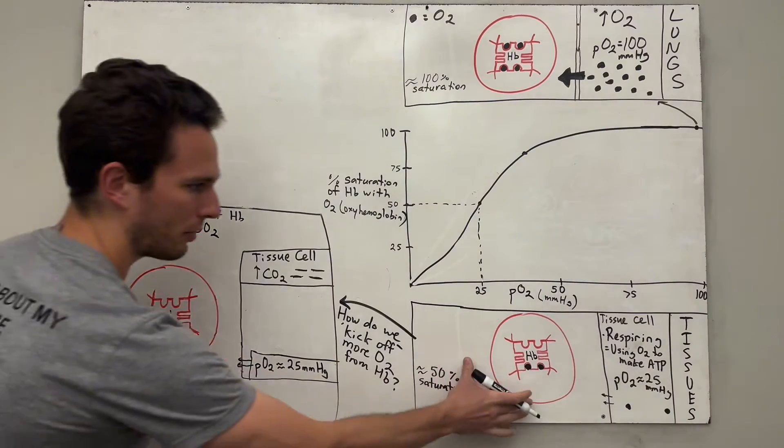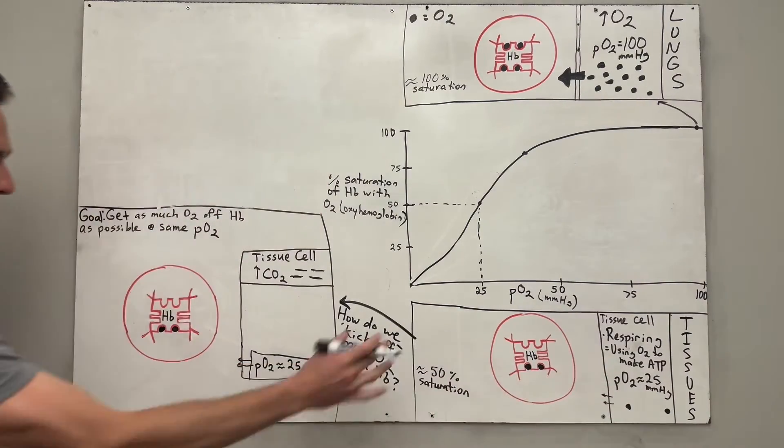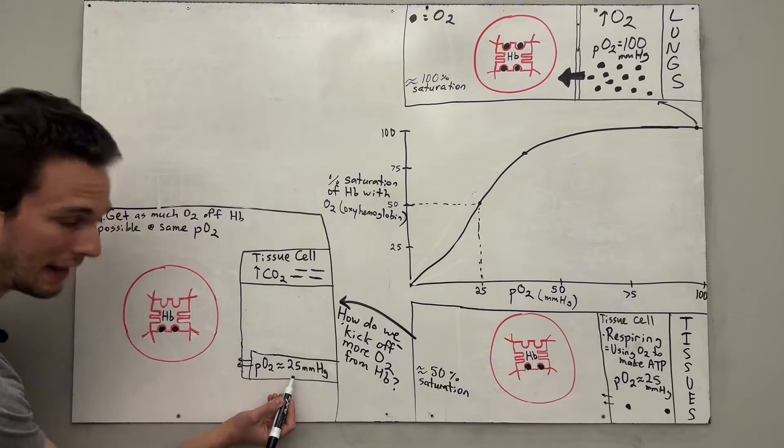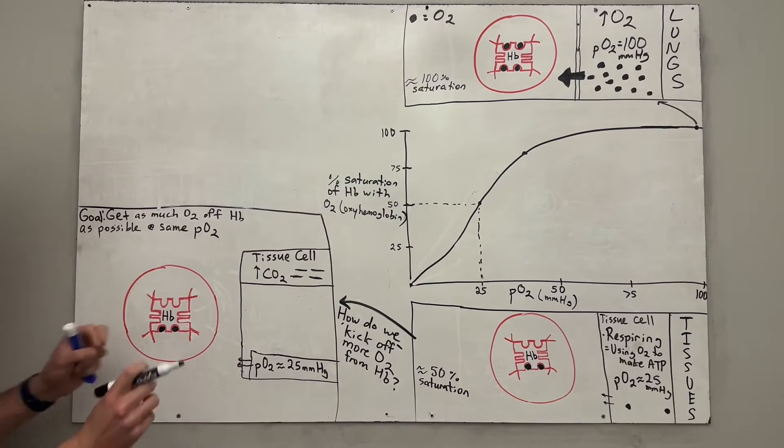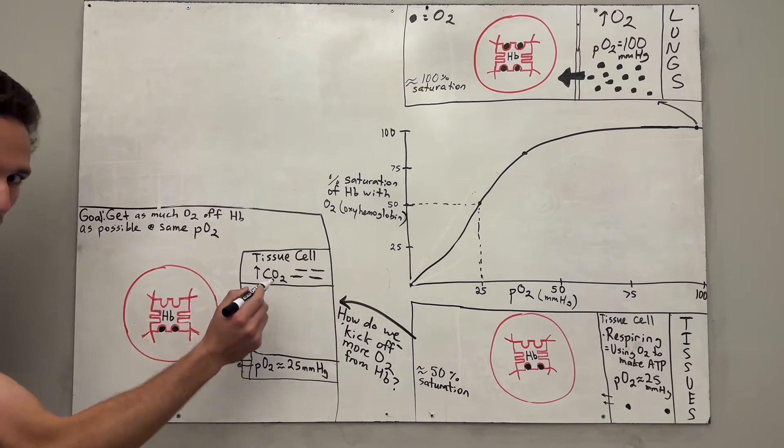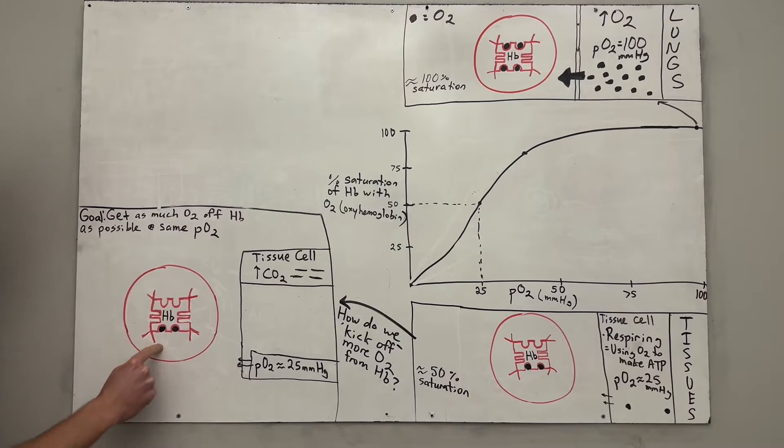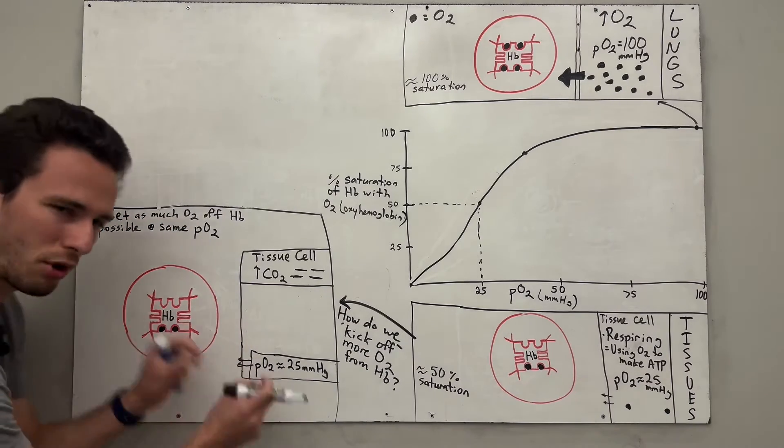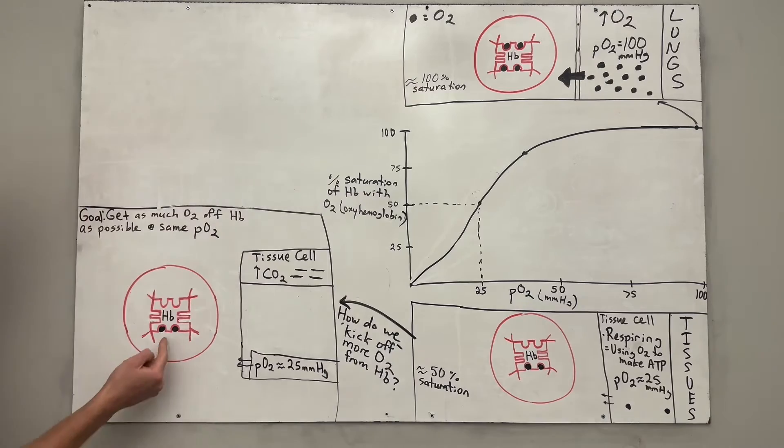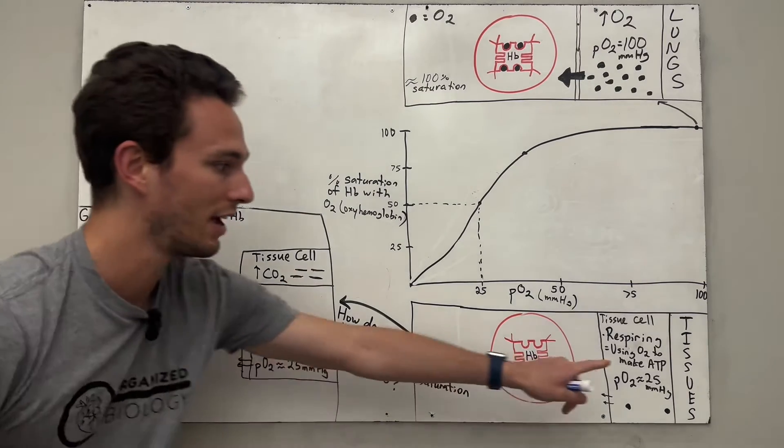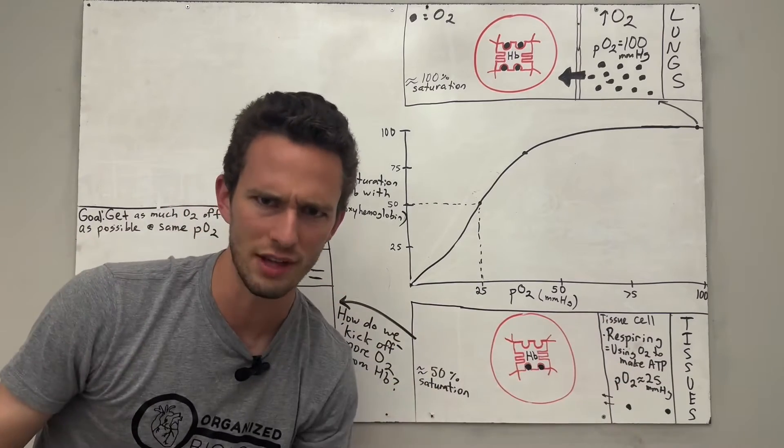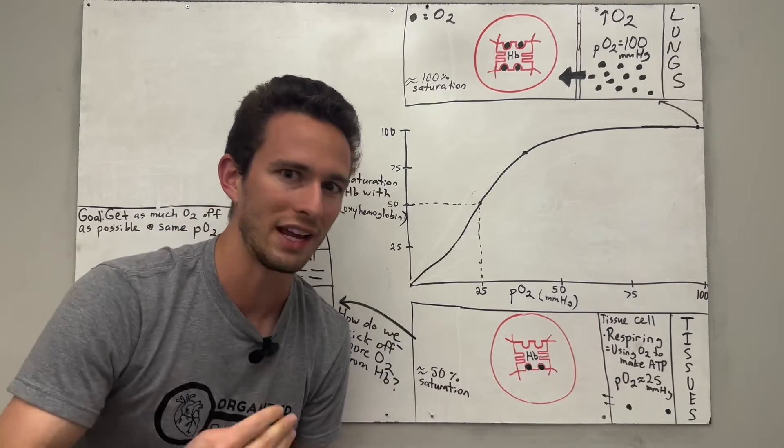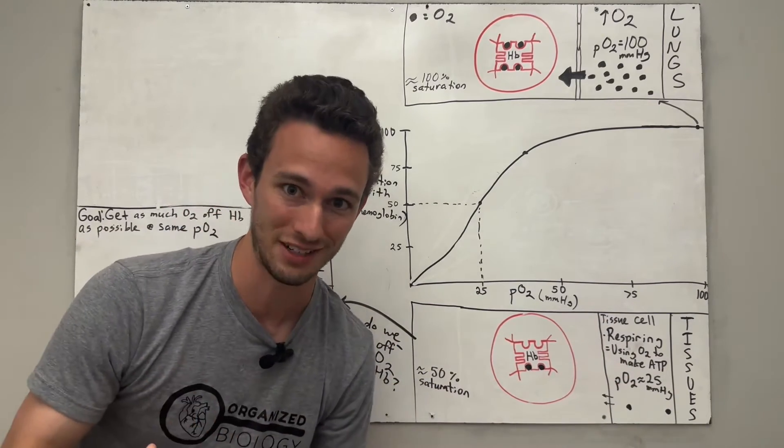So now here's the same drawing of the red blood cell, the partial pressure of oxygen that I drew here. The partial pressure is still 25. We've still got that 50% saturation, but remember the goal at the tissue cells is to get as much oxygen off the hemoglobin as possible at the same partial pressure. We basically want to unload as much oxygen as we can because these cells need it to make that ATP. So how do we do that? Well, there's four different ways we're going to amplify this effect. Let's get into that now.